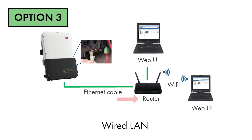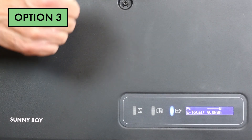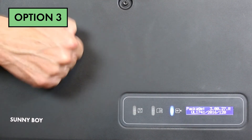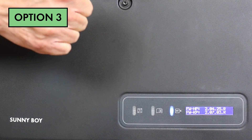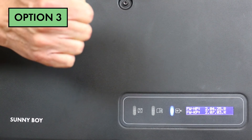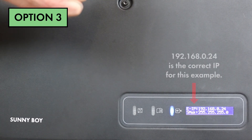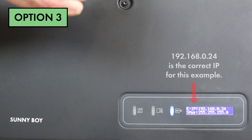For a wired LAN connection, first the inverter is connected via an Ethernet cable to the router. Then the device running the web browser must be connected to the same network as the inverter. The connection method of the device to the network does not matter. Knock on the inverter lid to activate the screen, then continue to knock slowly to advance to the screen that shows E-IP. This is the IP address used to access the user interface.